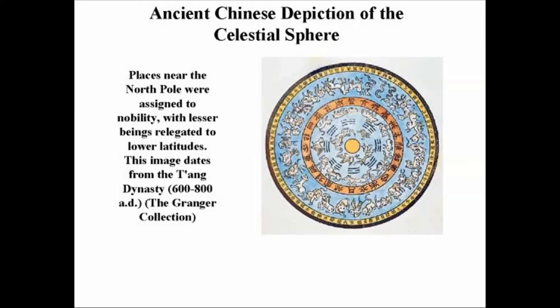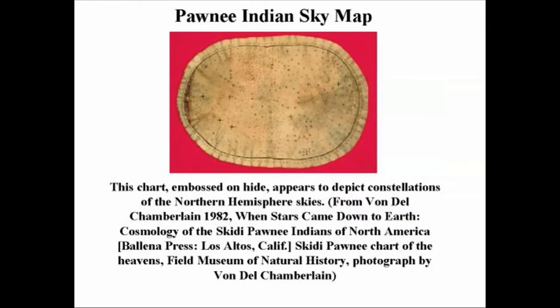The ancient Chinese here you'll see have a celestial sphere. So a flat representation of the globe of the night sky.